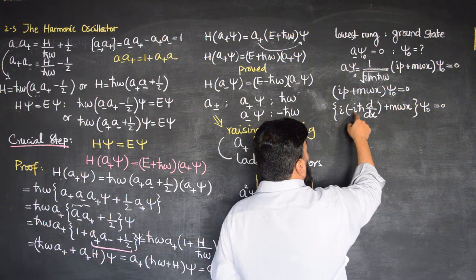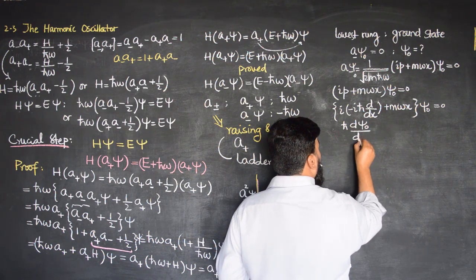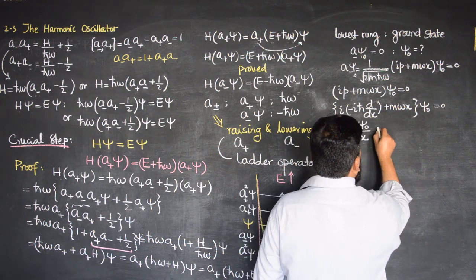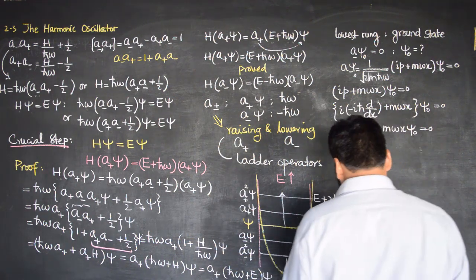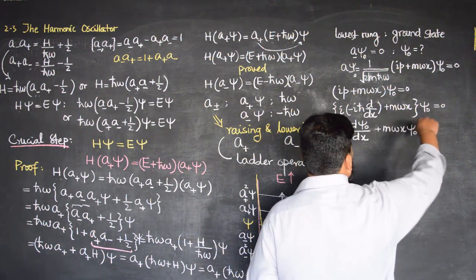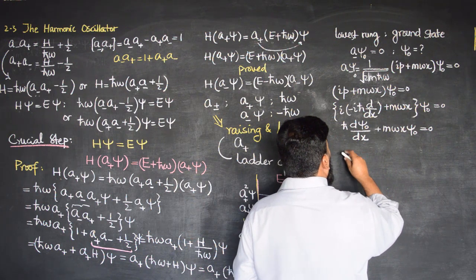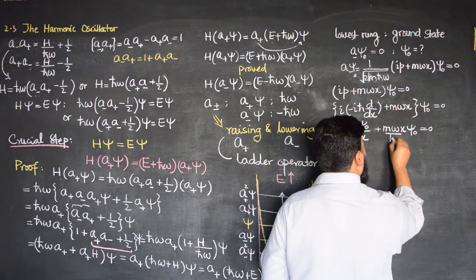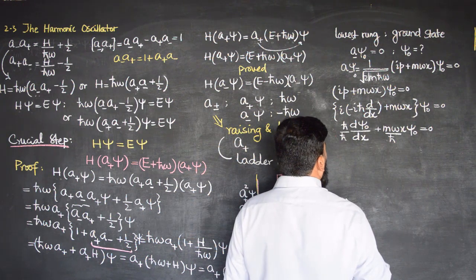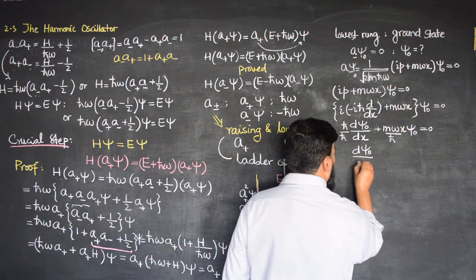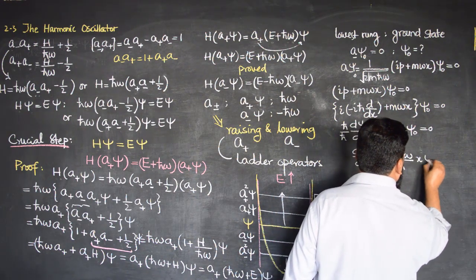So we have: −i²ħ (dψ₀/dx) + mωx ψ₀ = 0, which gives ħ (dψ₀/dx) + mωx ψ₀ = 0. Moving the second term to the other side and dividing by ħ, we get: dψ₀/dx = −(mω/ħ) x ψ₀.